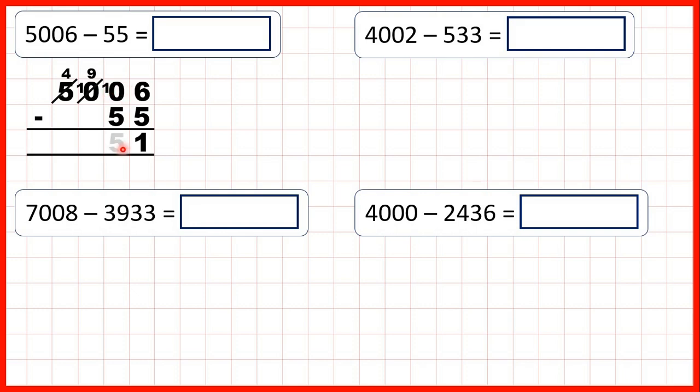Now, 10 minus 5 is 5, 9 minus nothing is 9, 4 minus nothing is 4, so our answer is 4,951.